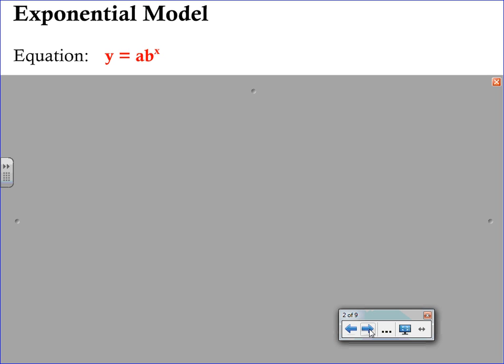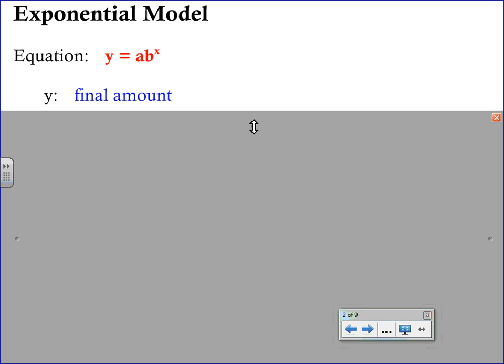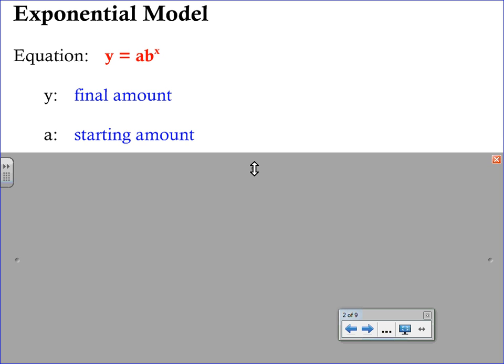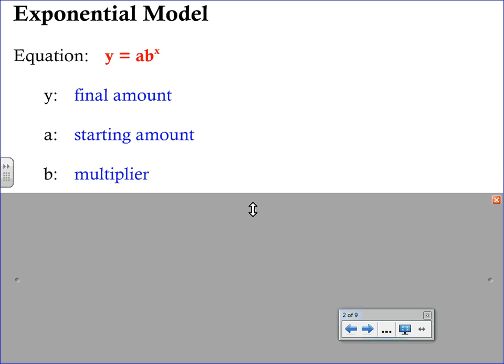We start again with the same exponential model. We're always going to use the equation y equals a b to the x and most of the pieces are going to mean the same thing that they did in our previous video. Y is going to be your final amount or the amount that you are looking for. A is the starting amount or the original amount or the initial amount. B is the multiplier.